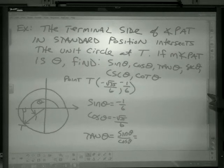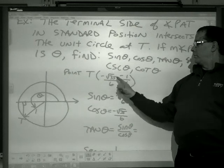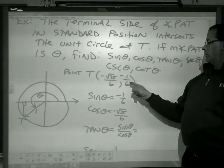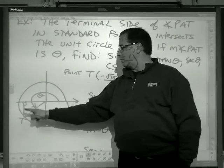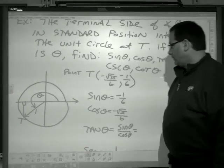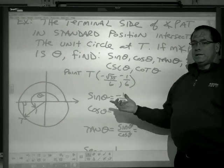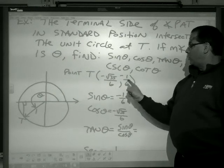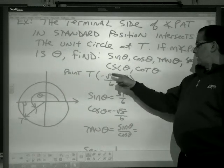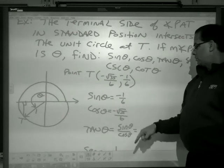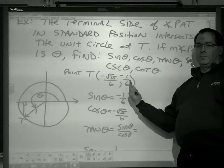So, if point T has the following coordinates, negative radical 35 over 6, comma, negative 1 over 6. So, both are negative, I know it's in the third quadrant. So, I'm going to draw a little triangle in the third quadrant. The sine of the angle, we learn in days 1 and 2 that the sine is just the y value, negative 1 over 6. Cosine, just the x value, negative square root of 35 over 6. Where did this point come from? It's given to you in the problem.